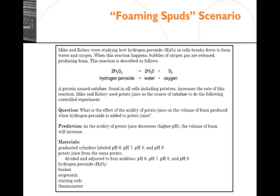So in this scenario, titled Foaming Spuds, the student is given the background. Mike and Kelsey are students that are studying how hydrogen peroxide is broken down in cells by the action of the enzyme catalase. The question here is, what is the effect of acidity of potato juice on the volume of foam produced when hydrogen peroxide is added to the potato juice? In this case, the manipulated variable is the acidity. The responding variable would be the amount of foam, which is the oxygen gas produced. There is a prediction and a list of materials.